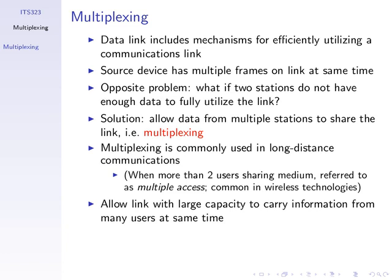We've seen how to calculate the efficiency of a link using stop-and-wait and sliding window, but in practice the efficiency depends on how much data you have to send. If you don't have data to send at some period of time, the link sits there idle. So the problem is: if we don't have enough data to fully utilize the link, what do we do?